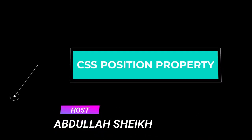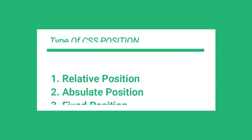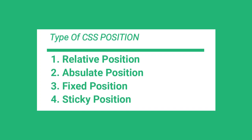Hello everyone, this is Abdullah from Code Prime. In this tutorial we are going to learn the CSS position property — how we can apply CSS position and how many properties we have. Basically we are going to cover four types: relative position, absolute position, fixed position, and sticky position. So let's start this video right now.